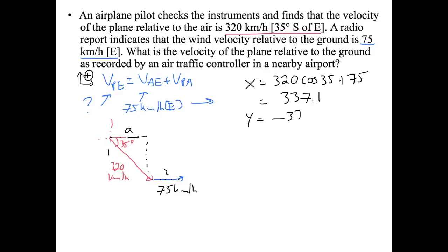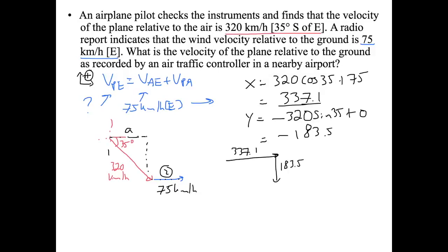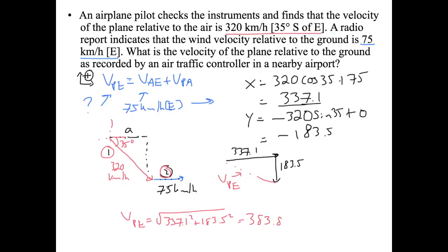For the y-components, upward is positive so it's negative: y1 equals negative 320 sine 35, and vector two has no vertical component so y2 equals zero. That gives us negative 183.5 km/h. We draw the result: positive 337.1 in x and negative 183.5 in y. The hypotenuse is the velocity of the plane relative to the earth.